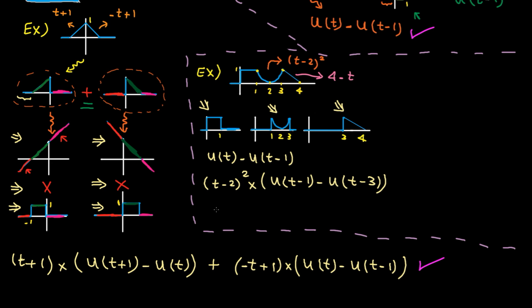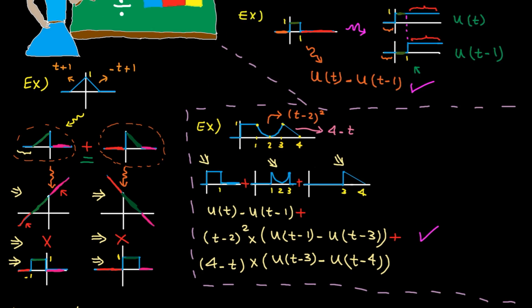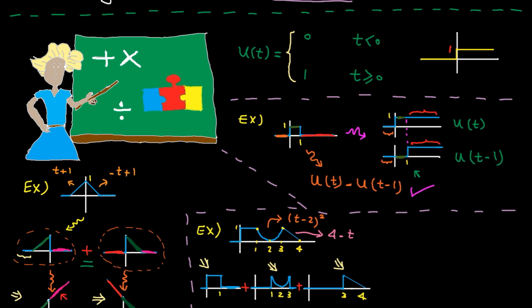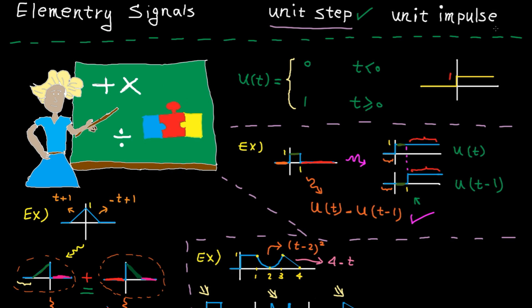Finally, the last part can be expressed as the line 4 minus t multiplied by a window, which is 1 from 3 to 4. Don't forget the summation. We are done with the unit step.